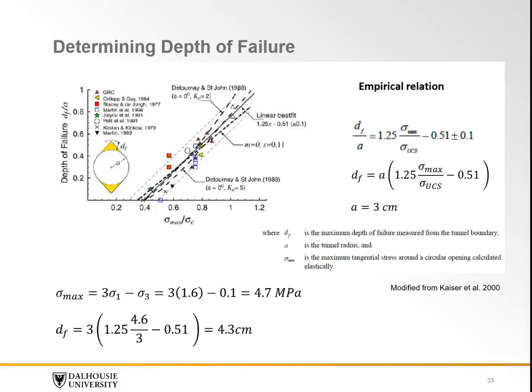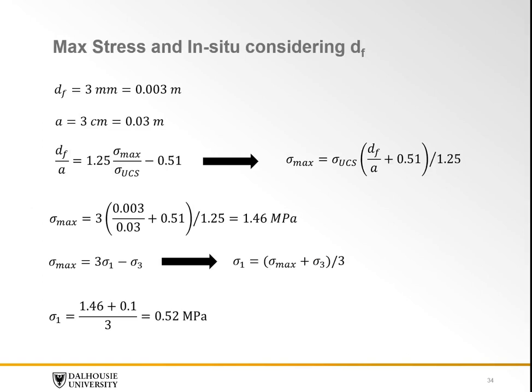The depth of spalling was calculated using the measured stress where spalling was experienced at 1.6 MPa. With this value, the maximum tangential stress would be 4.7 MPa, and the depth of failure was calculated to be 4.3 cm, which is off the chart for the empirical equation. The redistribution of stresses around the tunnel directly relates to the principal stresses, and it was believed the magnitude of the vertical load applied may not be the maximum principal stress. Instead, the measured depth of failure was used to estimate the maximum tangential and principal stresses, assuming a minimum principal stress of 0.1 MPa based on the numerical model. It was determined that the maximum tangential stress was 1.46 MPa and the maximum principal stress was estimated to be 0.49 MPa.